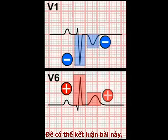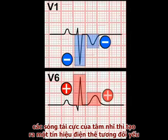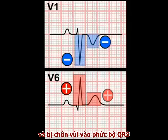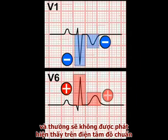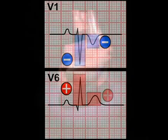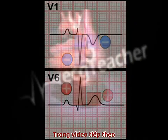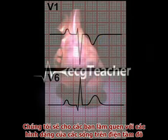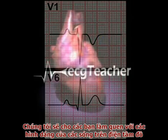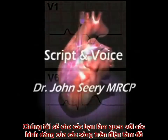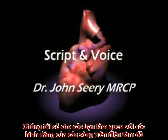Atrial repolarisation produces a relatively weak electrical signal which is buried in the QRS complex and is generally not detectable on a standard 12-lead ECG. In the next video, we will ensure that you are familiar with the nomenclature of the ECG recording.